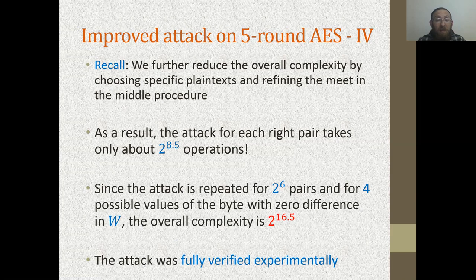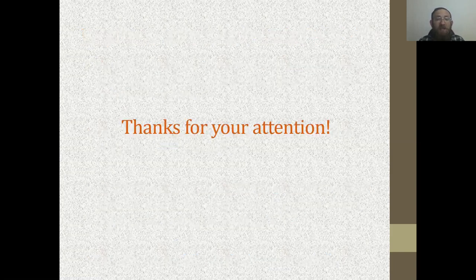Let me close with two open questions. First, can we further improve this attack — either reducing the complexity, or more importantly, achieving the same complexity of 2^16 in a more realistic attack model such as chosen-plaintext or even known-plaintext? Second, can we find other variants and further applications of the new Retracing Boomerang attack? Thanks for your attention.